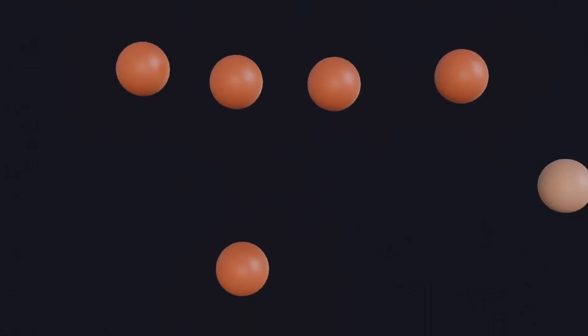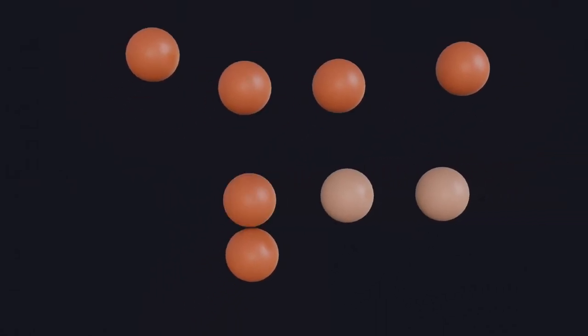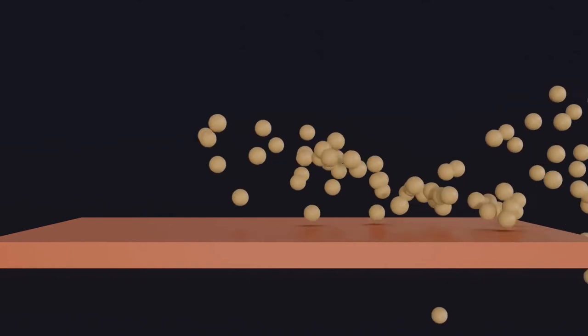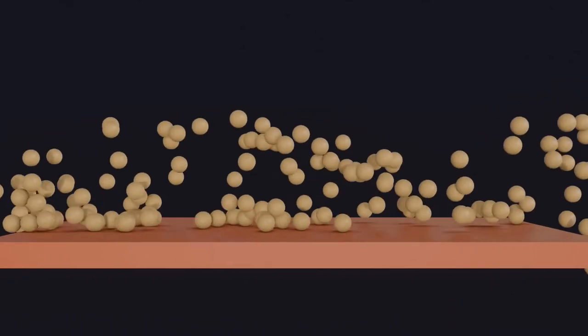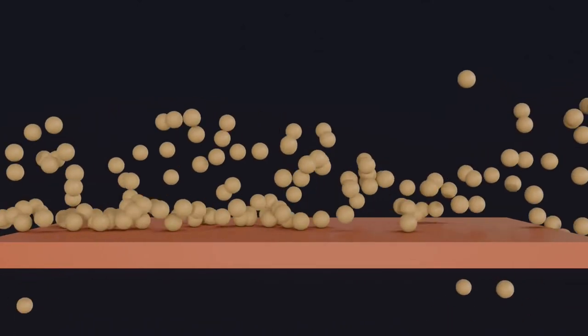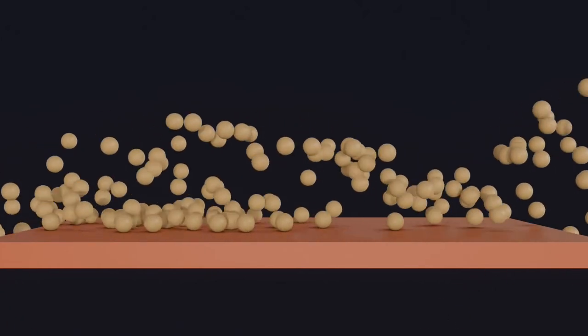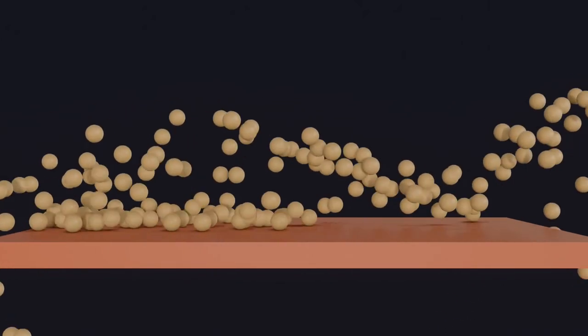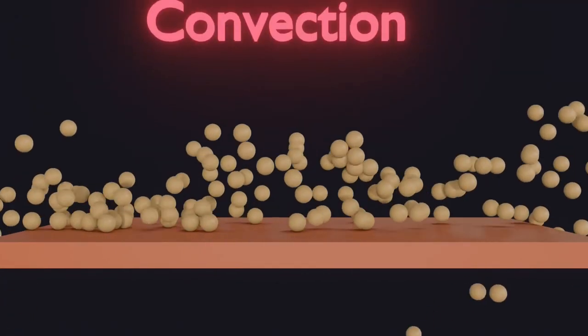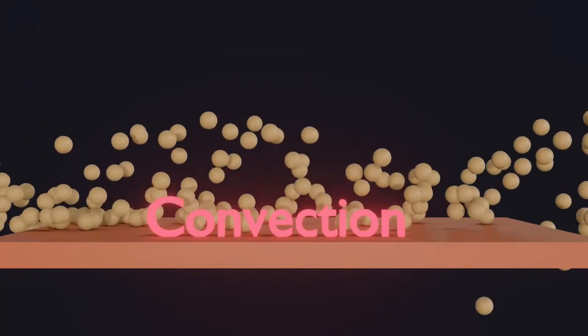This can only happen when the third molecule is in motion and comes in contact with the first molecule on its own. So this type of energy transfer where the molecules have motion, but more importantly have a directional motion towards the source and attain energy from the source, is called convection.